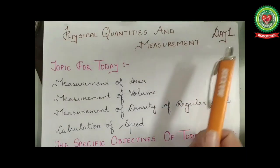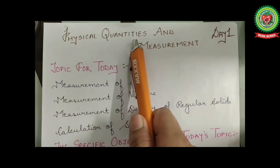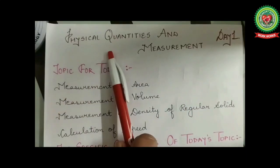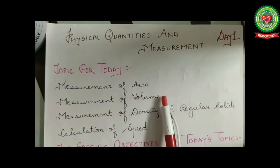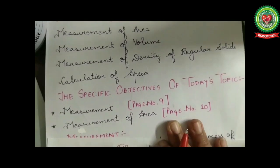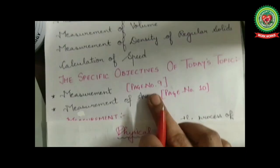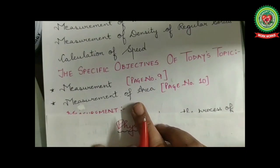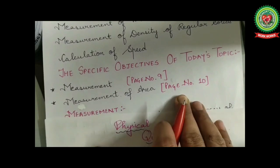Hello students, it's day one for the chapter on physical quantities and measurement. The objectives of this chapter are measurement of area, measurement of volume, measurement of density of regular solids, and calculation of speed. The specific objectives of today's topic are measurement on page nine and measurement of area on page ten.